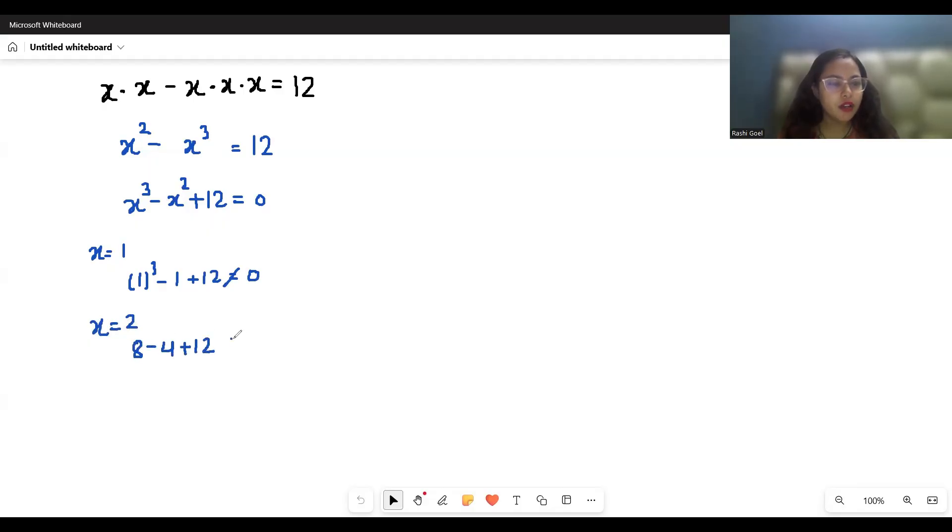Now if we take negative x equals minus 2, so minus 2 cubed minus minus 2 squared plus 12... sorry, minus 8 minus 4 plus 12.